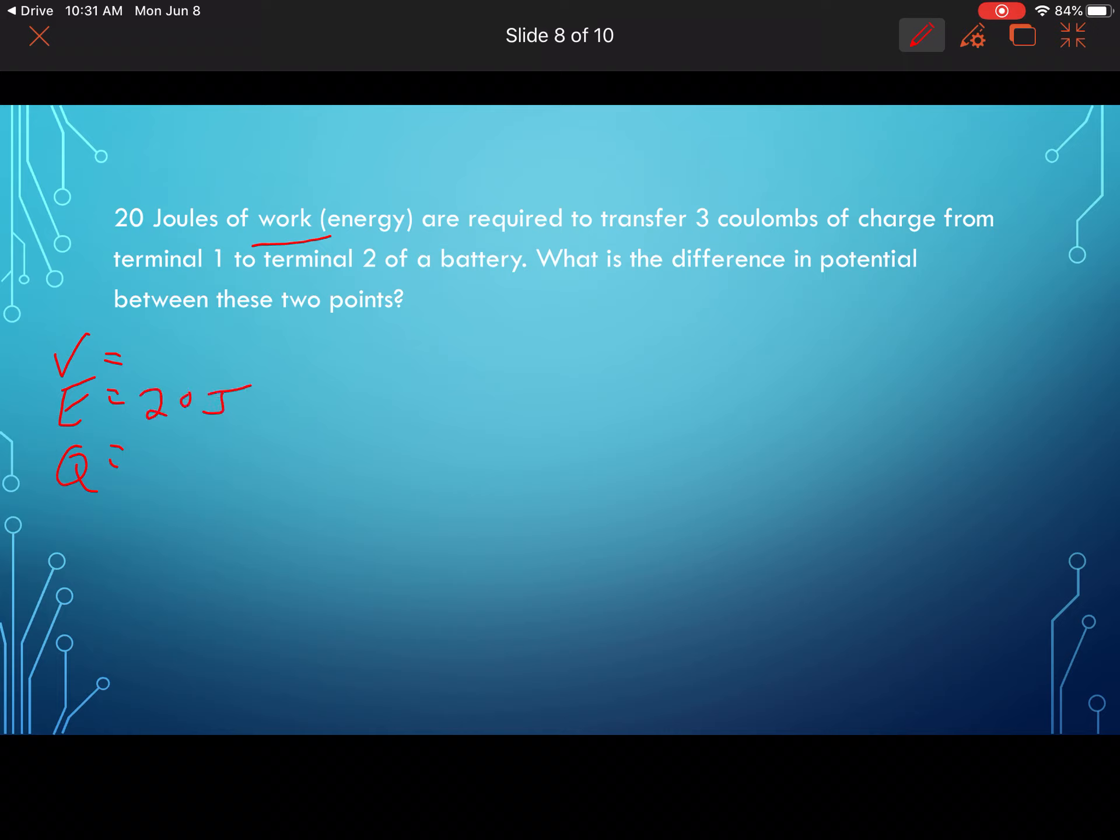So we've got 20 joules of work - so when we talk about work, that means energy, so right away 20 joules goes here - are required to transfer 3 coulombs of charge, so that's going to be our Q value there. It's coulombs, so 3 coulombs. So we've got 20 joules and I've got 3 coulombs. What is the difference in potential? So you're going to see this phrase - difference in potential, potential difference, voltage - those all mean the same thing. So don't get tricked by that.